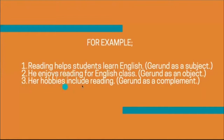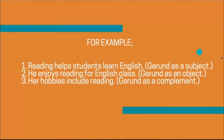Number three: 'Her hobbies include reading.' Reading here is a complement — a subjective complement to the noun 'hobbies.' So to summarize, a gerund has the form of verb plus -ing, but the usage is as a noun. In these examples, reading was used as a subject, as an object, and as a complement — but in all cases, it functions like a noun.